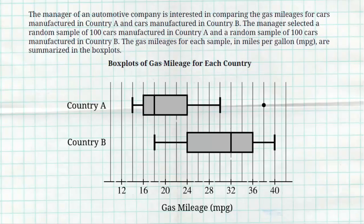So the manager of an automotive company is interested in comparing the gas mileage for cars manufactured in Country A and cars manufactured in Country B. He selects a random sample of 100 cars manufactured in Country A and another 100 cars manufactured in Country B, and he looks at the gas mileage in miles per gallon for each and they summarize it in this box plot below.